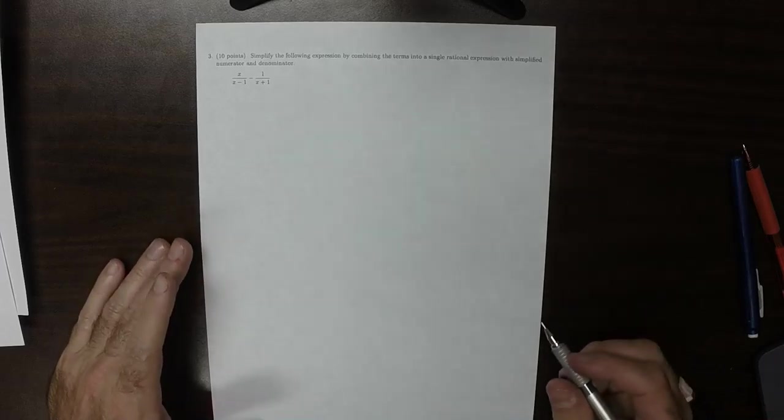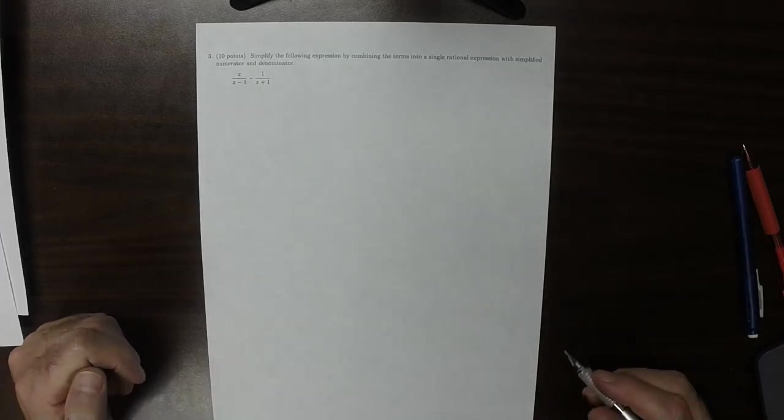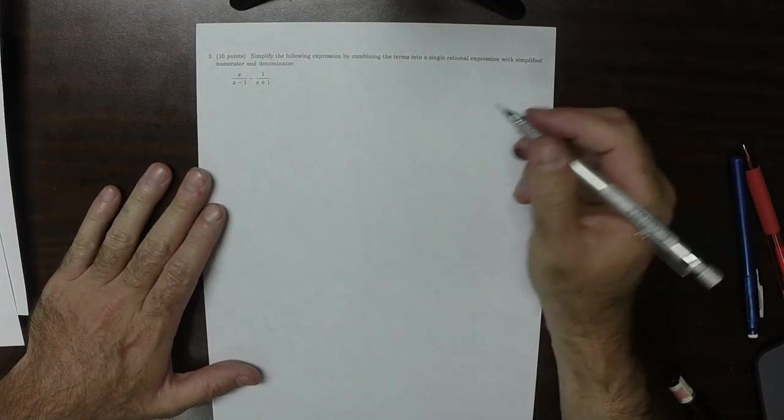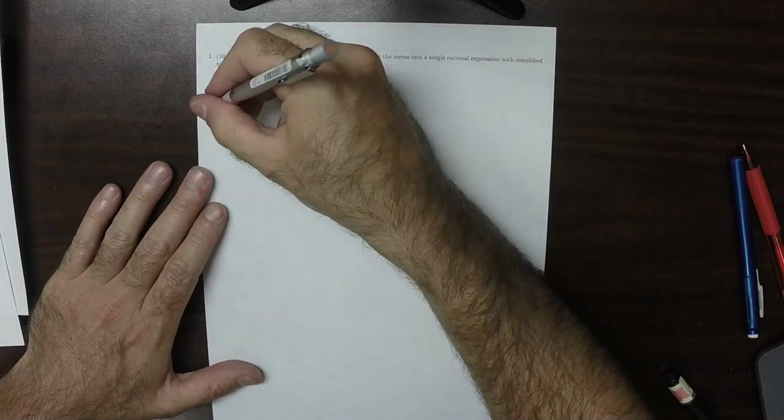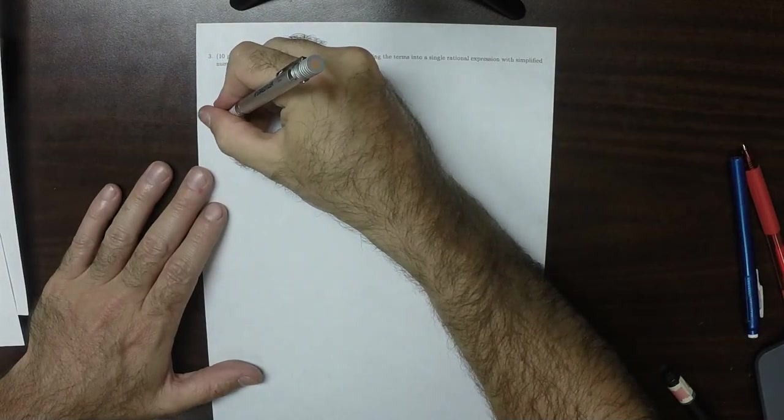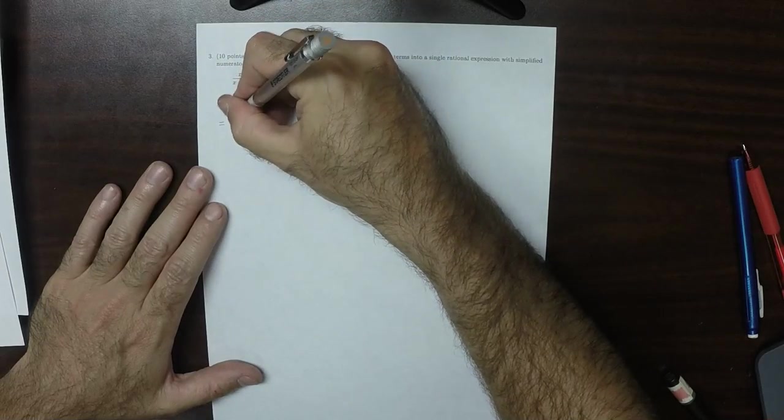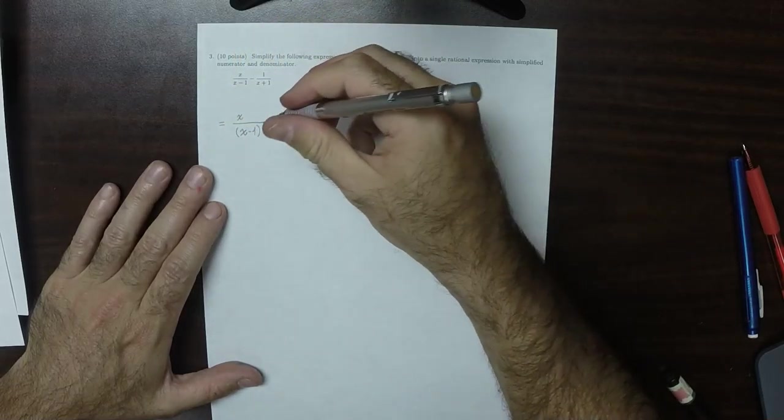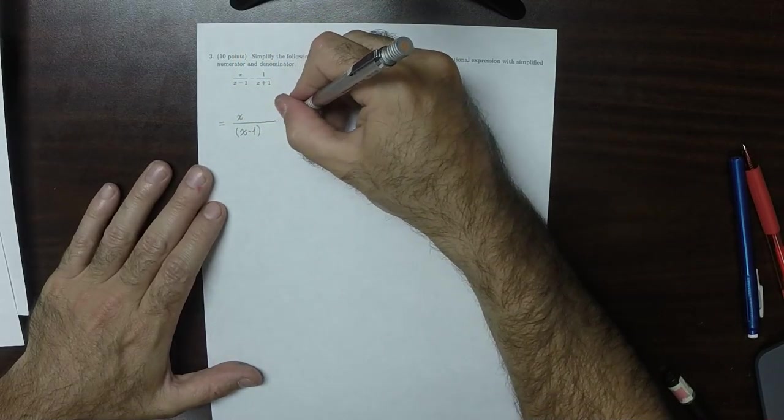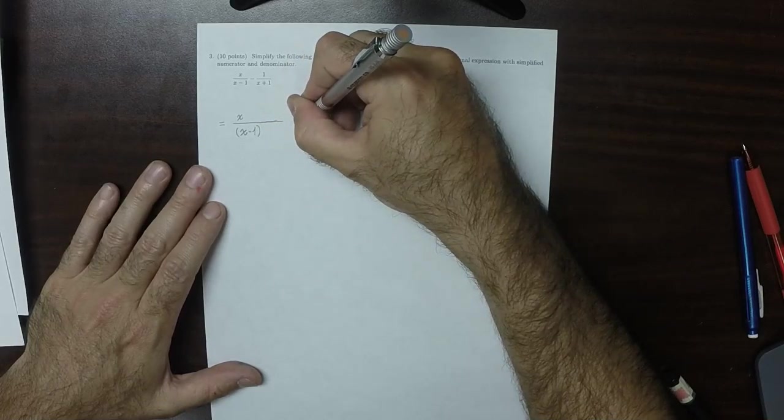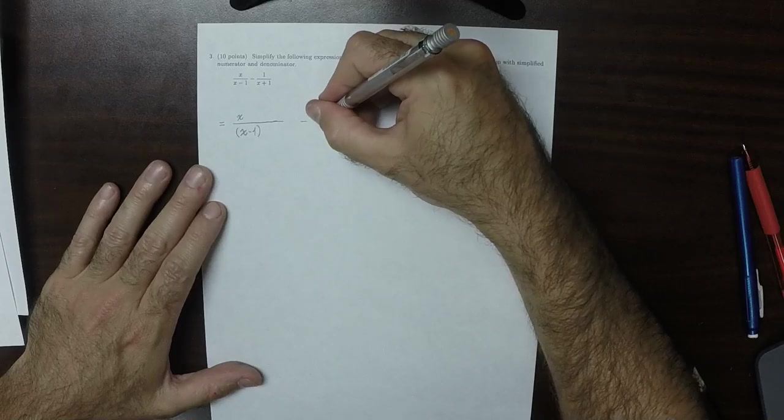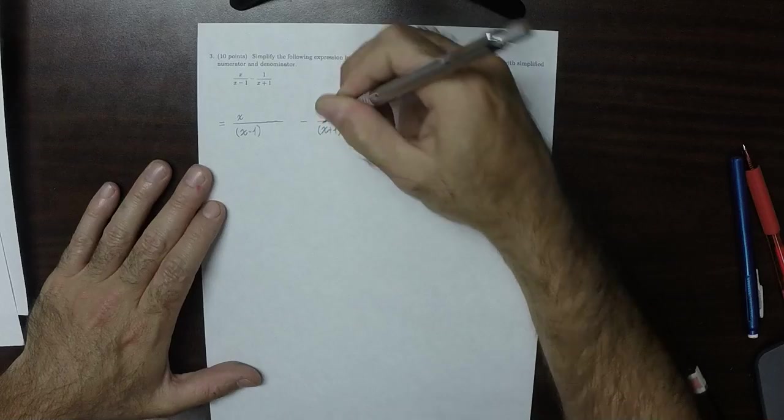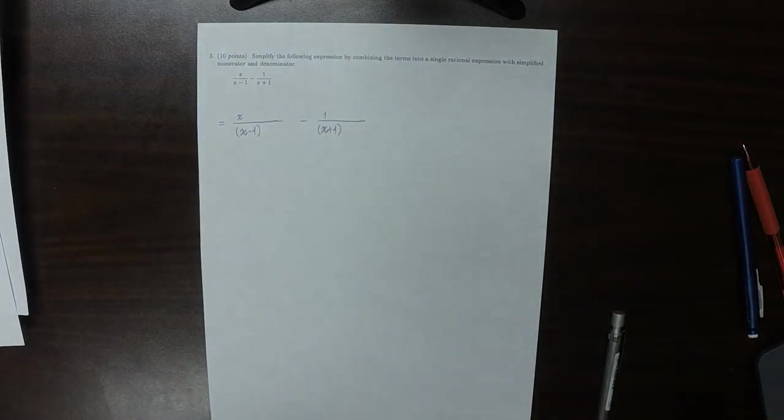Okay, and then for question 3, we're given a rational expression. We're supposed to represent it as a single rational expression. So a rational difference. Make it a single rational expression. So x over x minus 1 and then minus 1 over x plus 1. So I gave myself some room to write things. So we want to find a common denominator.